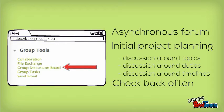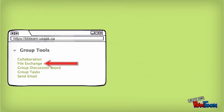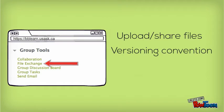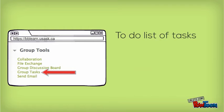File exchange is a very basic dropbox for uploading and sharing files with your group. Make sure you decide on a versioning convention when you're naming the files so that everyone's working from the latest copy. Group tasks is a simple to-do list that can be managed by your group leader and lets everyone know what still needs to be done.